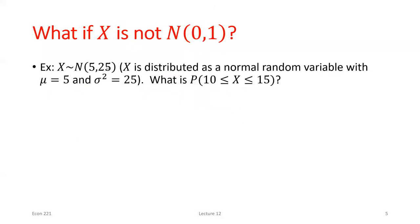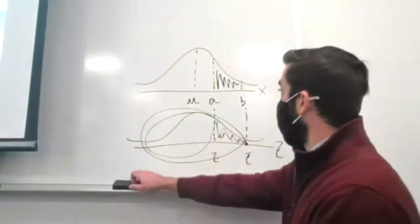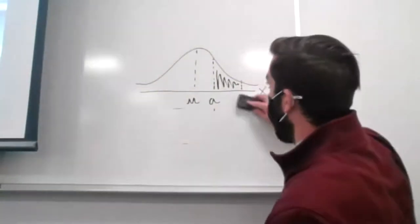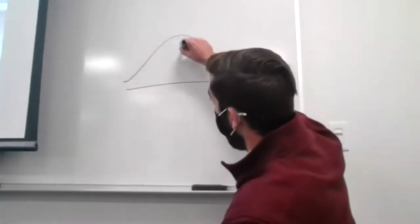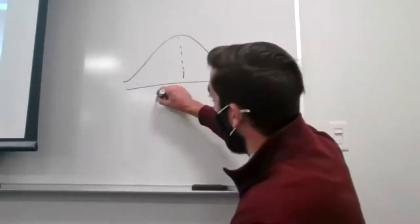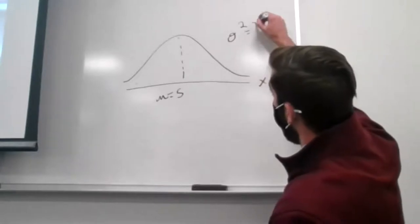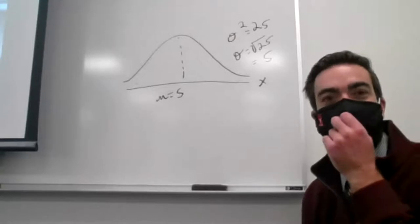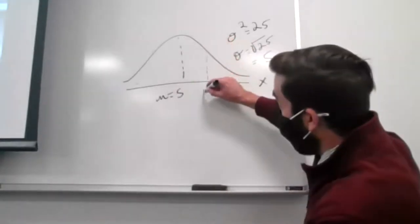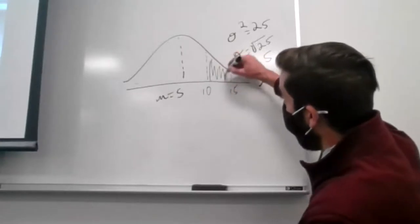Let's put actual values to this. Say we have a normally distributed variable with a mean of 5 and a variance of 25. What's the probability this variable takes on a value between 10 and 15? I always start by drawing out what I'm looking for. We have variable x, normally distributed, mean of 5. The variance is 25, so the standard deviation is the square root of 25, which is 5. We want to find the probability that x is between 10 and 15.